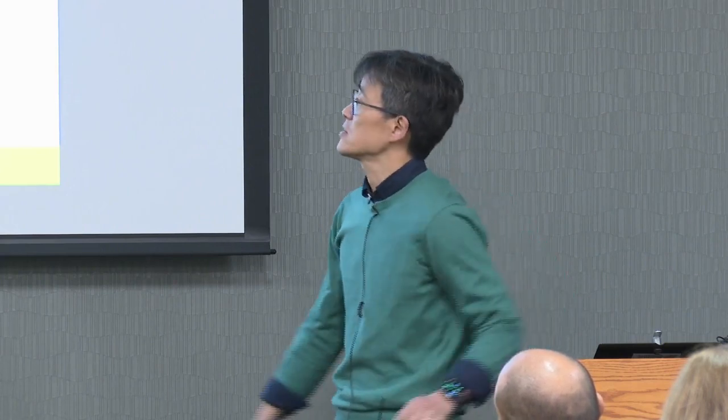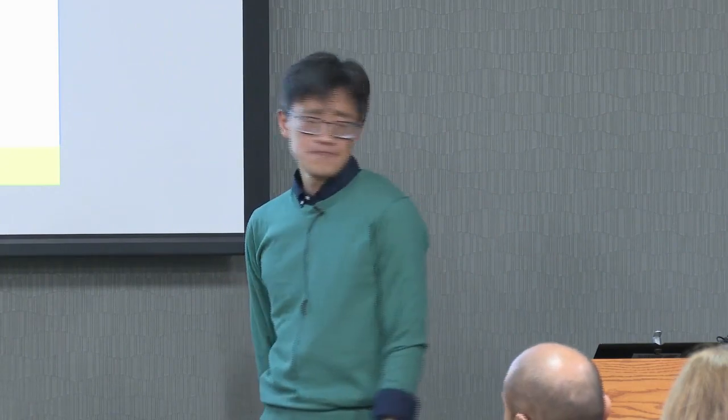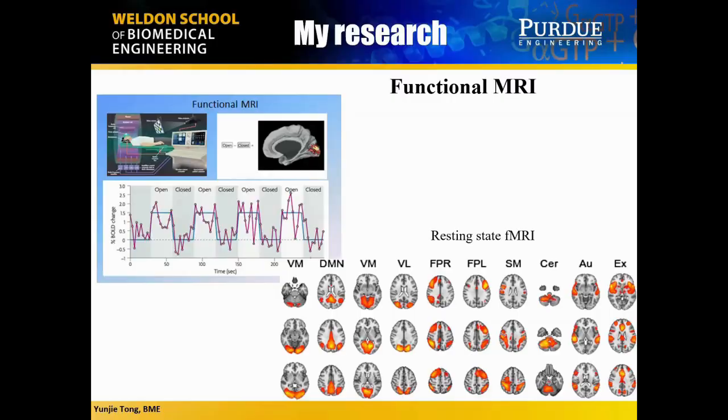However, fNIRS suffers a lot from physiological noise, and the spatial resolution wasn't that good. At the end of that work, I really wanted to work on some device that was very good in spatial resolution and not getting a lot of physiological noise. So that's why when I moved to McLean Hospital, I started to change my research to MRI.